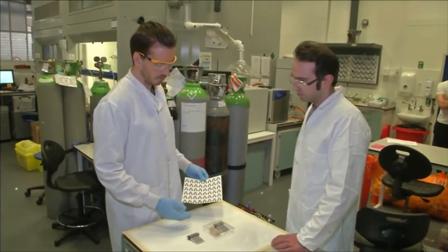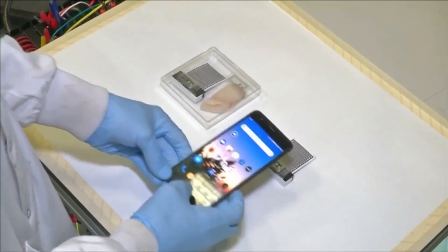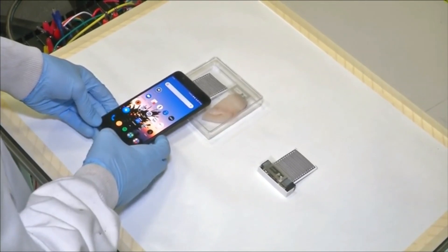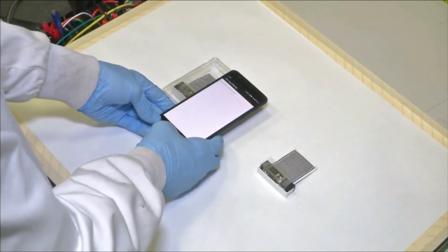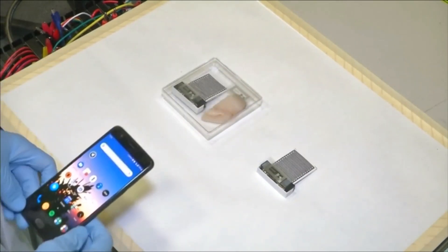Scientists in London think they have the answer to stop this happening. Using your smartphone, you'll soon be able to find out if the food in your fridge has gone off based on the gases coming out of it.